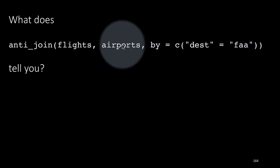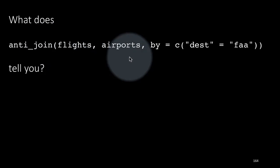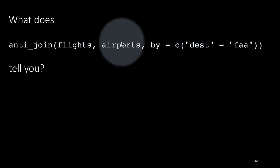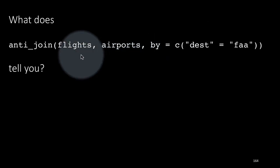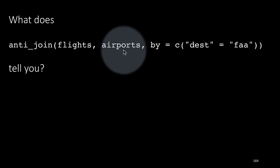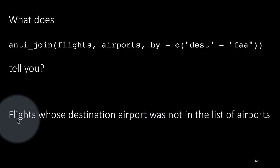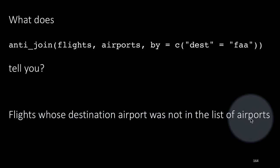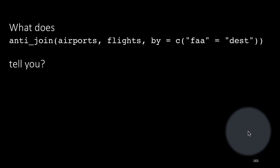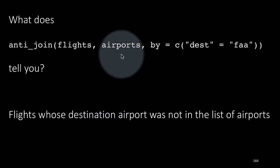We can look at what anti-join of flights and airports means: it retains only those flights for which the destination airport is not in the airports table — flights that went to destinations not in the airports table at all. You will be surprised; there are in fact such flights. After a little research, it turns out there are four such airports: I think three are in Puerto Rico and one is in the Virgin Islands. I don't know why those are not listed in the airports table, but they are not.